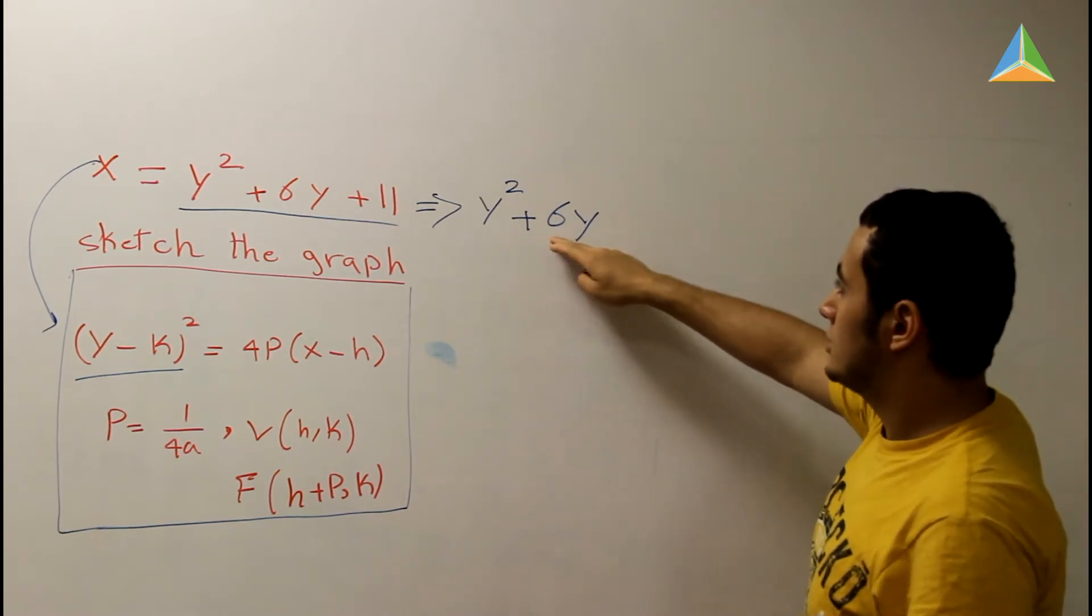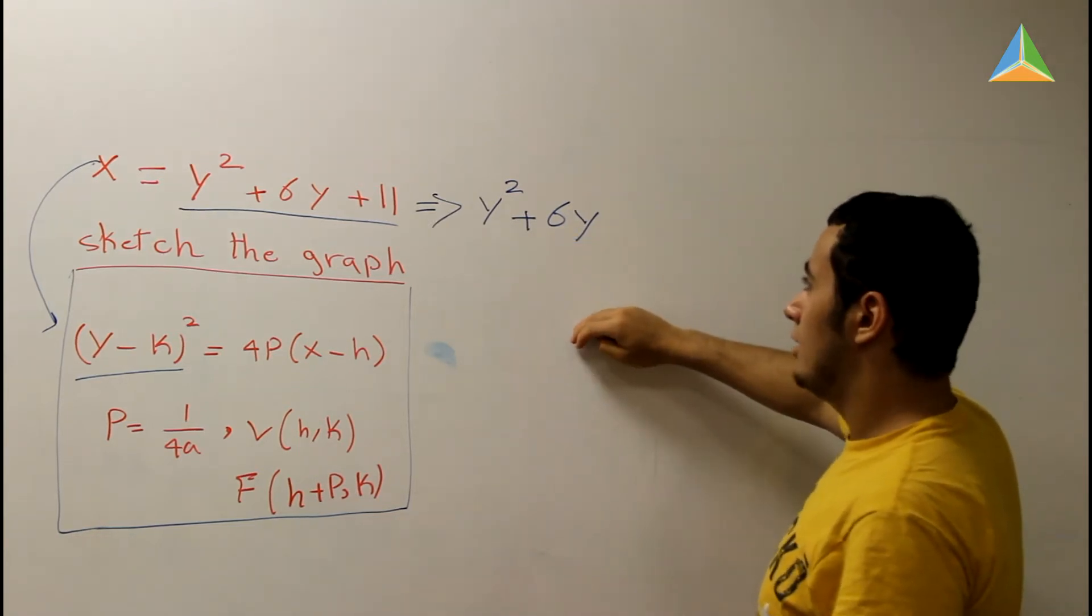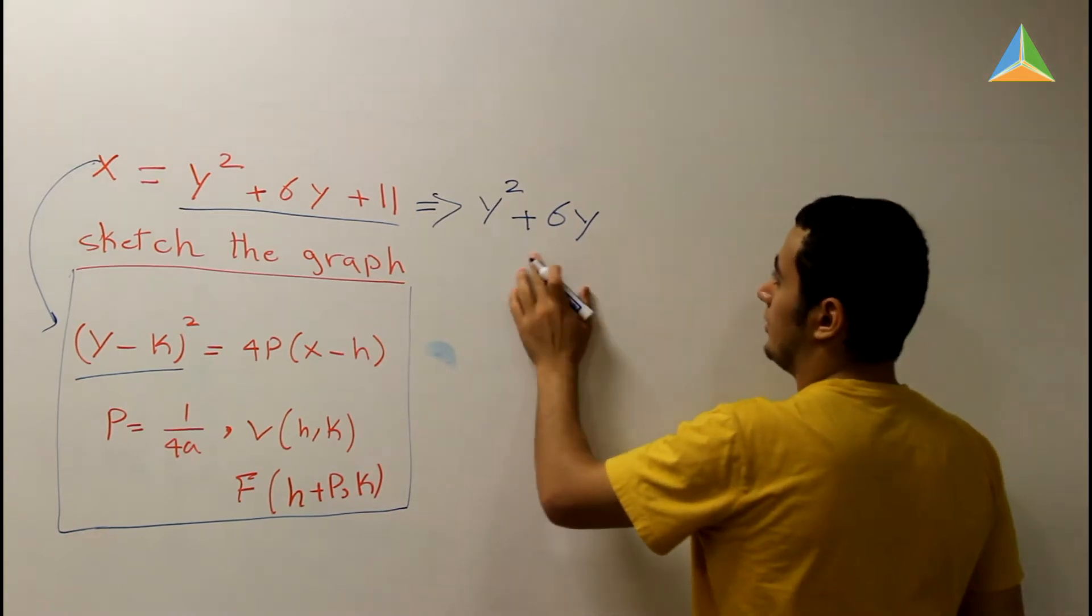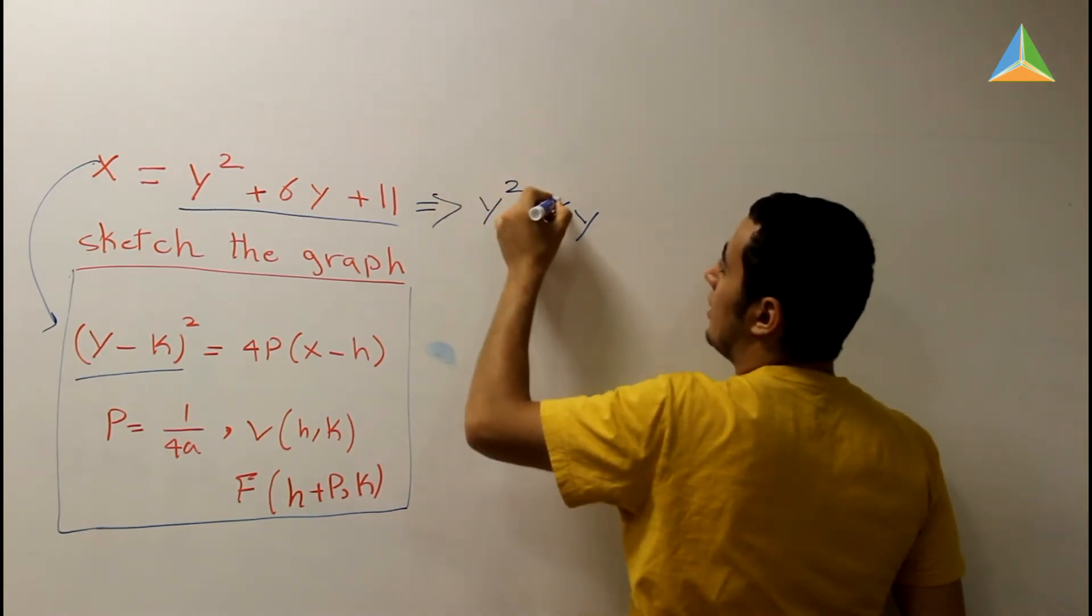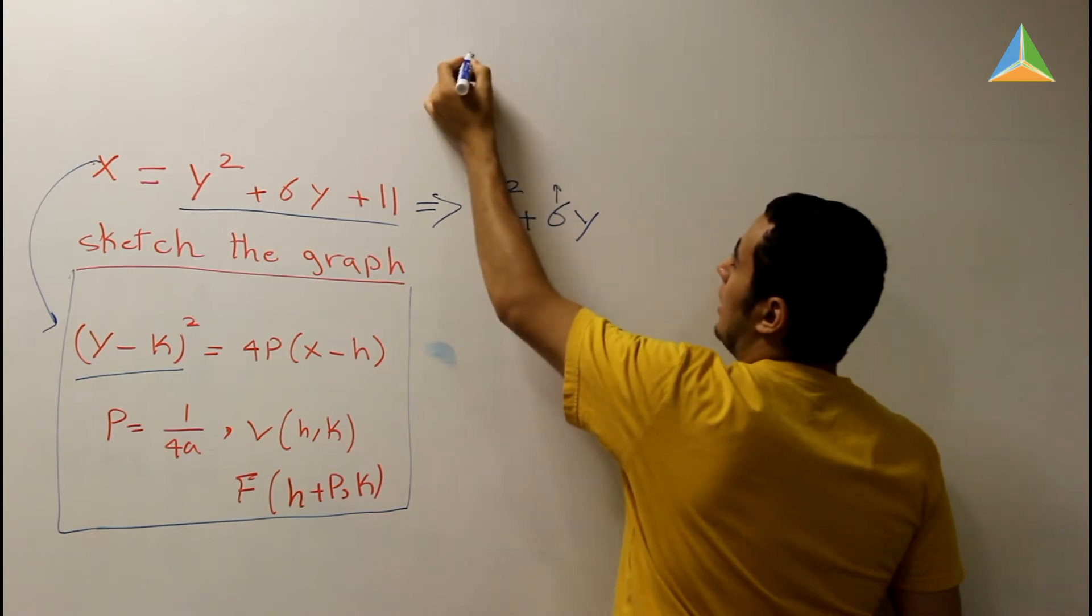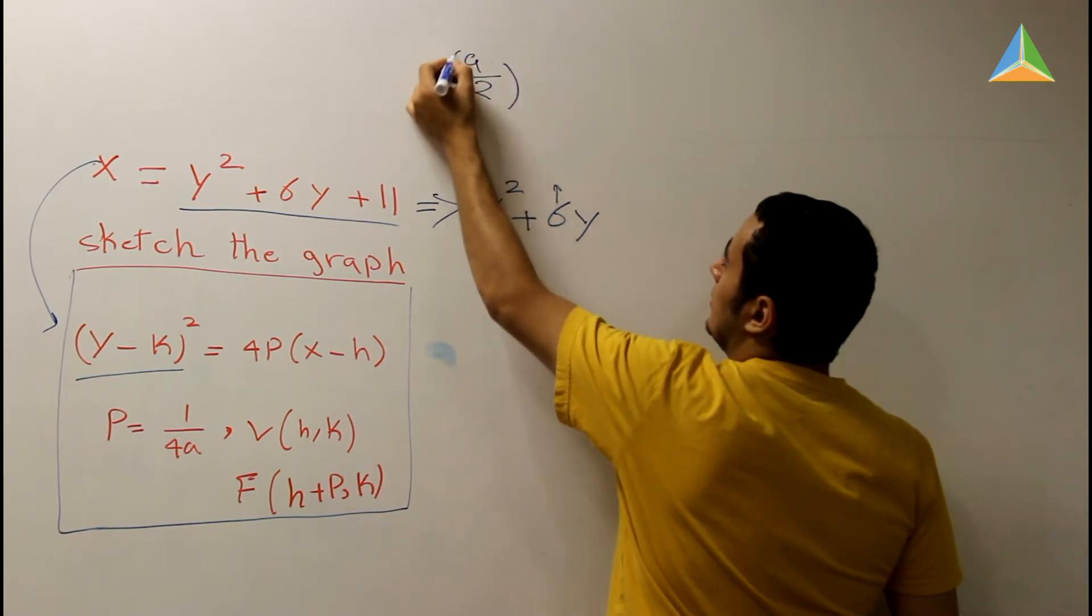y² + 6y. You divide the 6 by 2 to get 3, and then you square the value you get. How to complete the square? You divide this value, let's call it a, you divide a by 2, and then you square. This is how to complete the square.